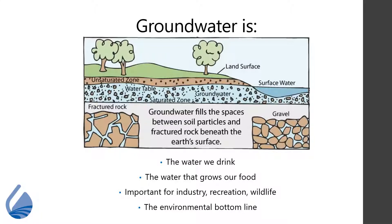Groundwater is the water beneath the surface located in the saturated zone, consisting largely of surface water that has seeped down. It's the source water of springs and wells, the water we drink, and the water that grows our food. Not only is it the world's most extracted natural resource, with nearly 27 trillion gallons withdrawn each year in the U.S. alone, but it also naturally recharges our wetlands, rivers, and lakes. Groundwater is the environmental bottom line.